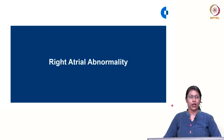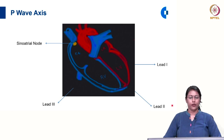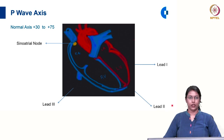First we will see right atrial abnormality. The impulses originate in the SA node, and depolarization spreads to the right atrium and to the left atrium. The net vector of this is such that the normal P wave axis is between plus 30 to plus 75 degrees.